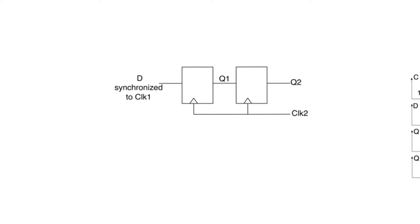A systematic way to do this is to sample at the receiver using a couple of registers. We have a single bit of data coming in, synchronized to the transmitter's clock — clock one. Instead of using a single register synchronized to clock two, we use two registers and look at the data at Q2, not Q1, because Q1 is still going to be metastable. The probability of metastability surviving at Q2 is so low that it is basically non-existent. This is a systematic way to synchronize data between two clock domains.